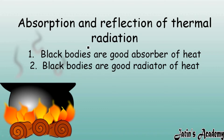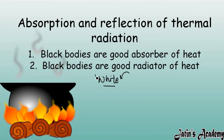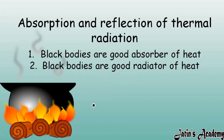Next topic is absorption and reflection of thermal radiation. Black bodies are good absorbers of heat as well as good radiators of heat. Black bodies absorb more and more heat from the surroundings. White bodies, on the other hand, are good reflectors of heat — whenever heat comes from outside onto white bodies, they reflect the heat back very easily and do not allow heat to go inside. If we wear black colored clothes, they absorb more heat and we feel very hot.